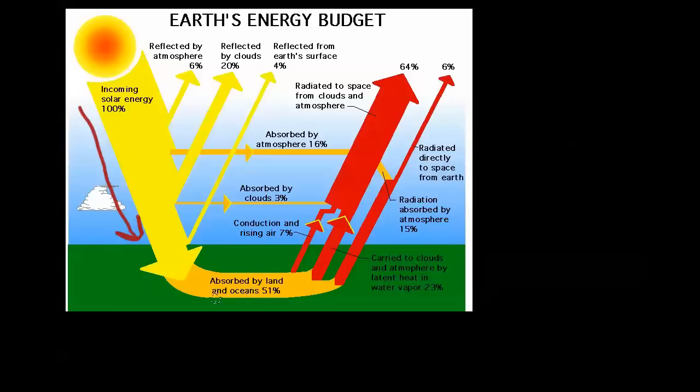But the majority of the sun's energy gets absorbed by the land and the oceans. Well, as we talked about in class, we know that the troposphere heats from the bottom up. What happens is, as this energy is being absorbed by the ground, after a while it's going to get re-radiated.